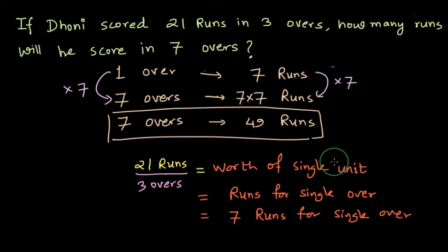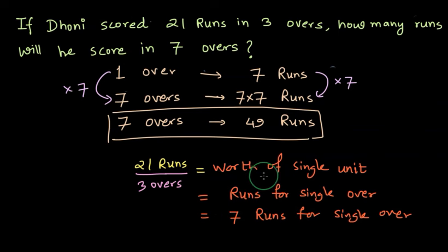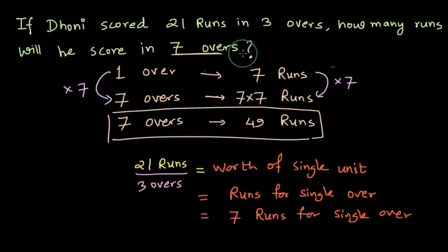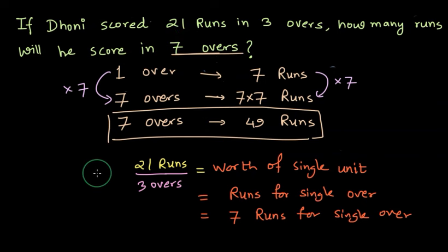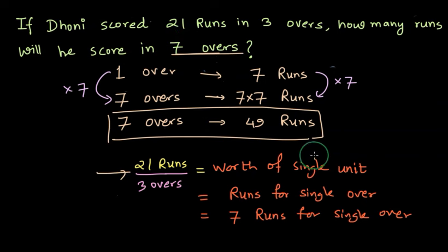The important step in the unitary method is that once you have found the worth for a single unit, you multiply the worth by the number of units that appear in the question. First you divide to find the single unit value, and then you multiply in the last step to get the answer.